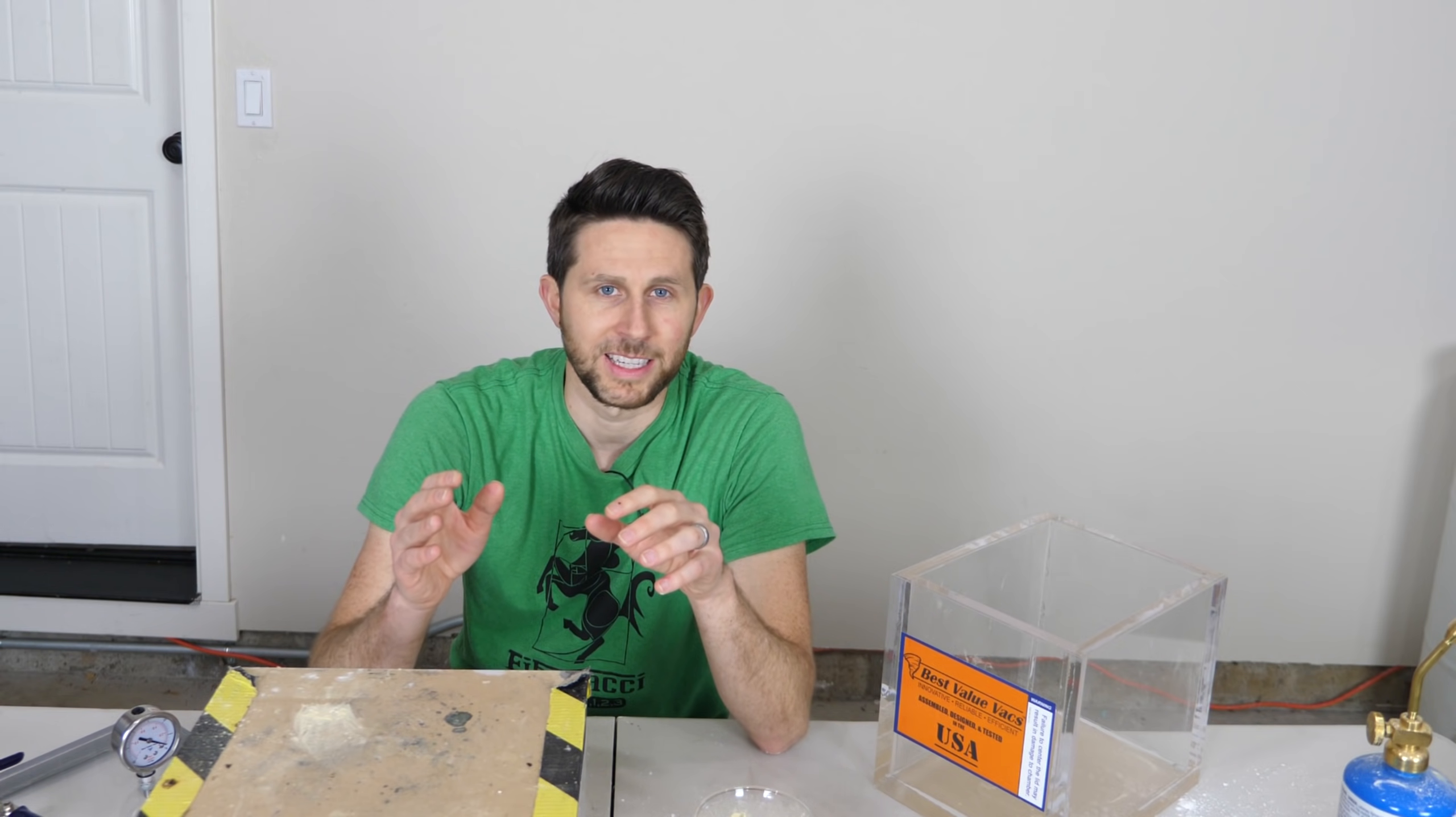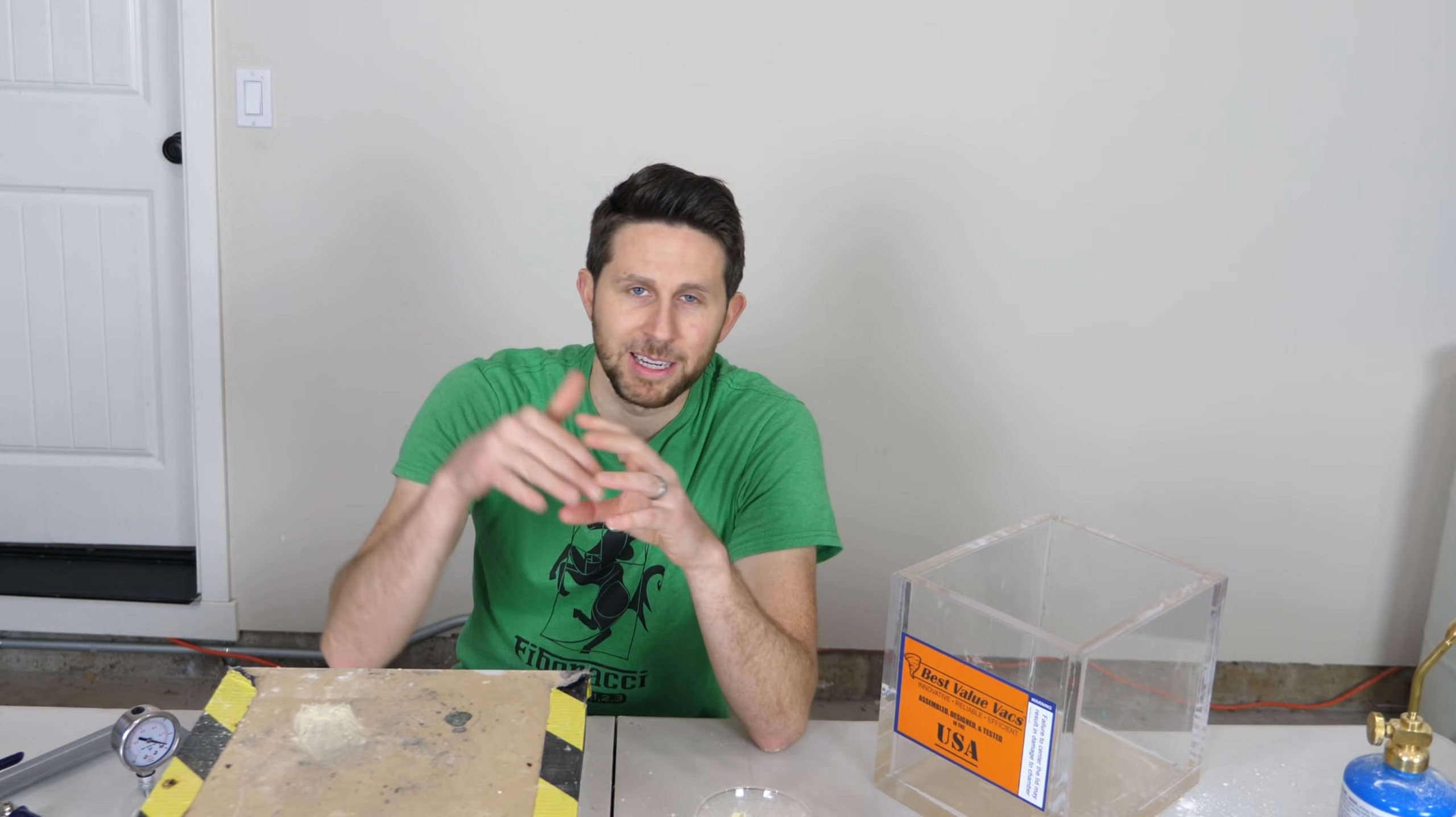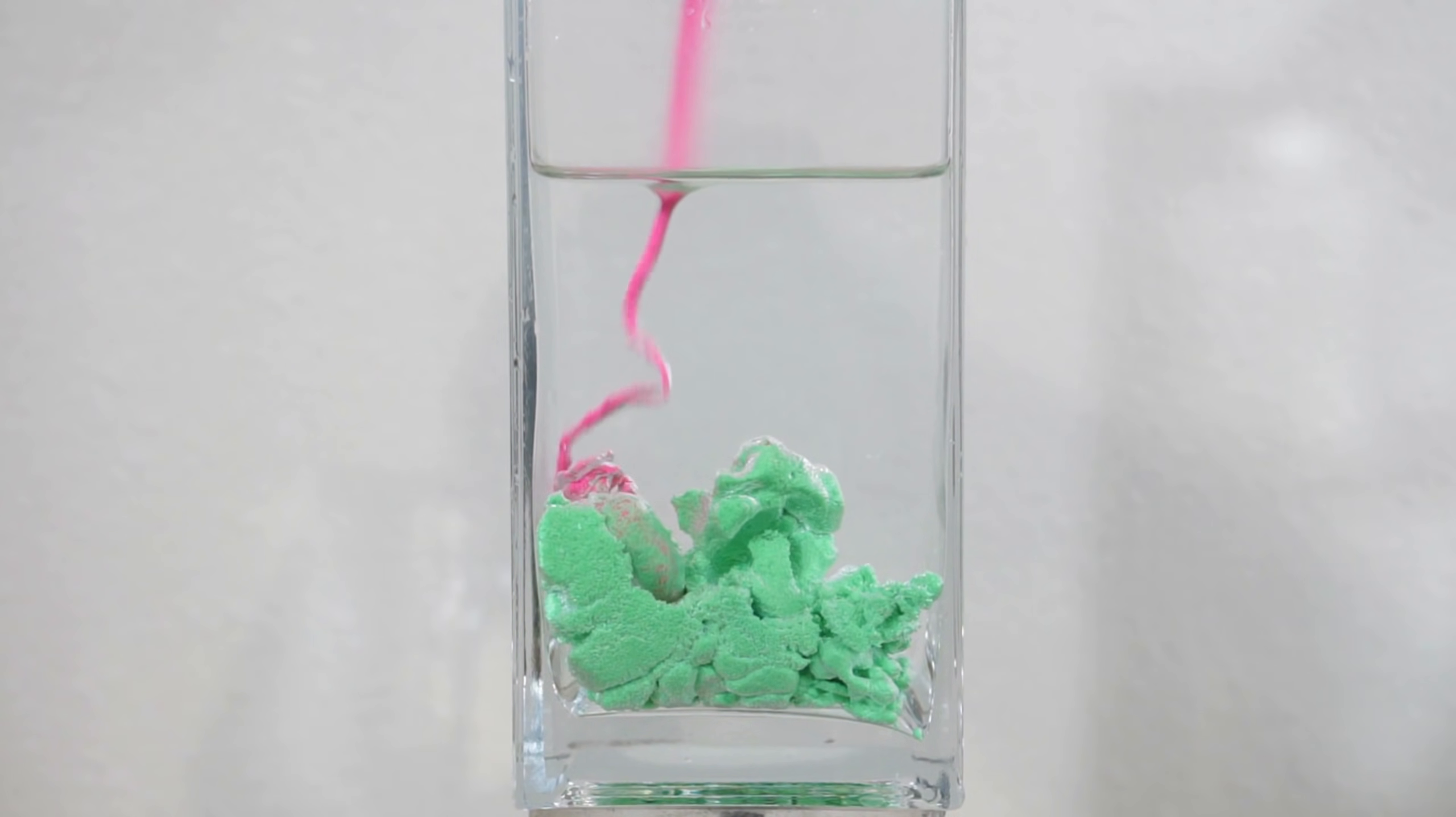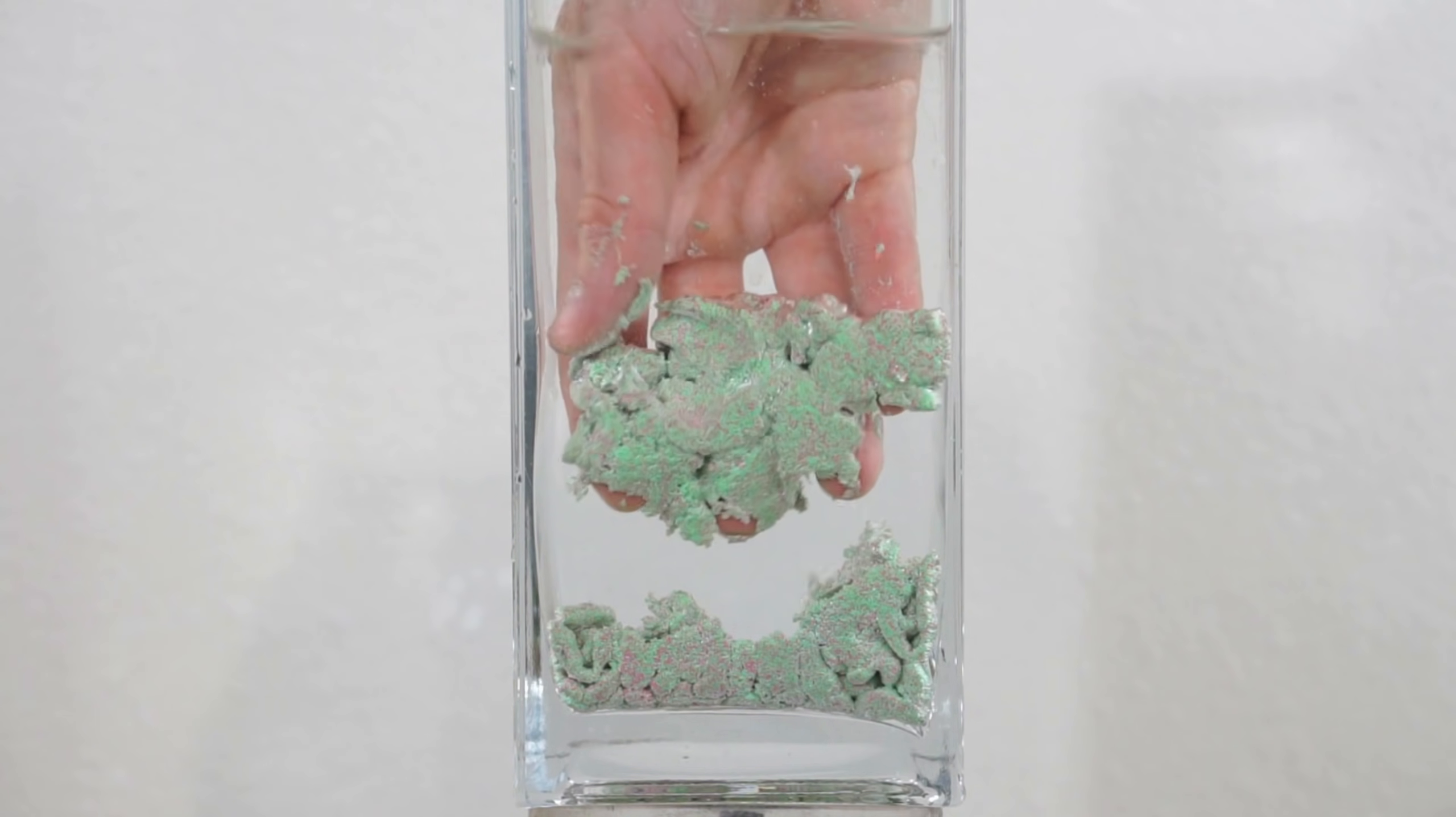And I showed this in a previous video with magic sand. So magic sand is the sand that when you put it in water, it never gets wet. You can pour it in the water. It looks pretty cool. And you can see that it kind of shimmers and shines. That's due to the reflective surface of the air water interface.